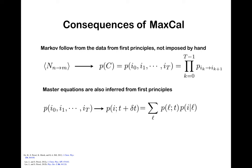Furthermore, master equations need not be imposed by hand — they can be inferred from first principles if warranted by the data. The principle of maximum caliber, supplemented by available data, gives a joint probability distribution. We can integrate out variables, marginalize the joint probability distribution, compute conditionals, and verify whether the master equation holds. If it does, great — our system satisfies the master equation. If not, it simply means the master equation was not warranted given the data.